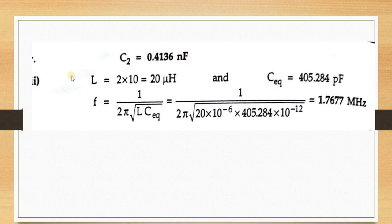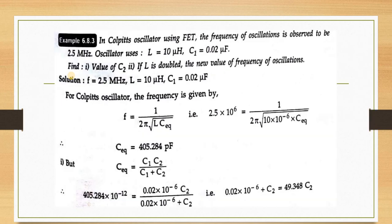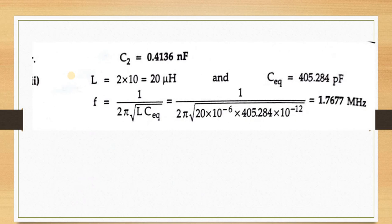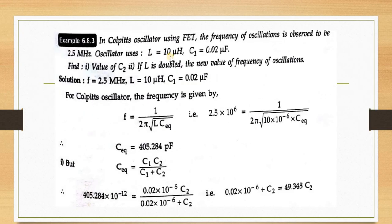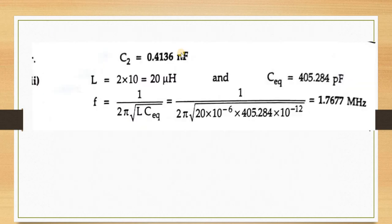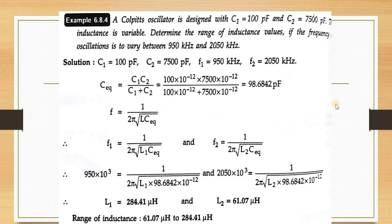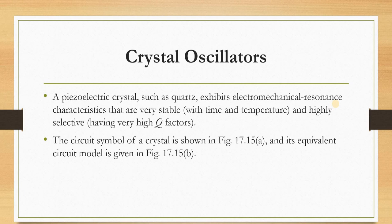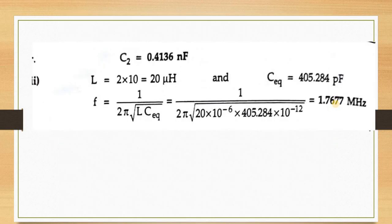For the second part: if L is doubled to 20 μH, with C_eq = 405.284 pF, substitute into F = 1/(2π√(L·C_eq)) to get the new frequency of oscillation = 1.7677 MHz. That completes the Colpitts oscillator. Thank you.